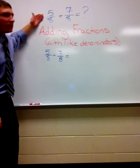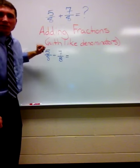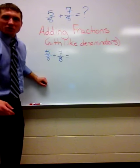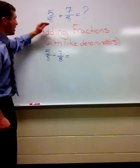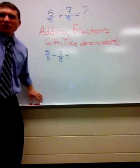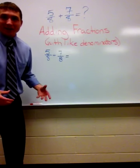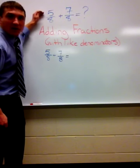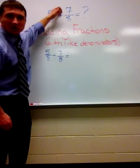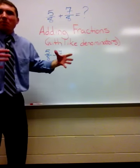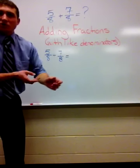Here we have 5 eighths plus 7 eighths. The first thing we need to do is make sure that our denominators are the same. They are both eighths. So if you could imagine this like two pizzas cut into eight equal slices, one person has five left over and the other person has seven left over. When you combine them all together, how much do you have left over?